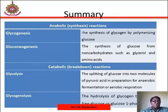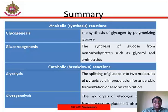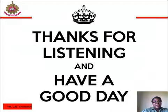In summary, glycogenesis and gluconeogenesis are both anabolic reactions, while glycolysis and glycogenolysis are catabolic reactions that involve the breakdown of glucose. Thank you for listening. Have a good day.